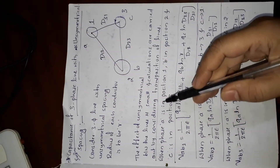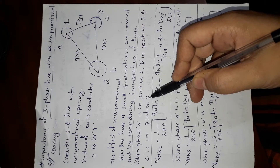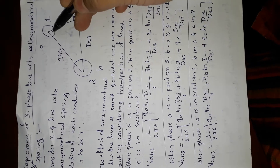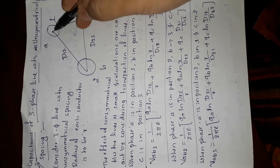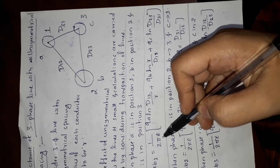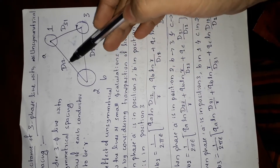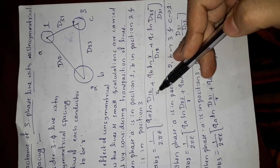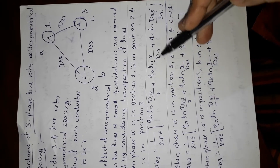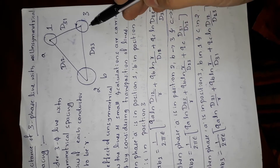When phase a is at the first position, b is at the second position, and c is at the third position, find the potential between conductor a and b. So V_ab1 — common factor is 1/(2πε) — due to charge qa the distance is d12, and due to charge qb it is in reverse order r divided by d12.